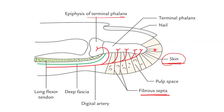The pulp space is distal to the digital synovial sheath of the corresponding long flexor tendons. Fibrous septae convert this space into tight compartments, mainly containing subcutaneous fat and blood vessels. The fibrous septae extend from the skin to the terminal phalanx in its deeper portion.